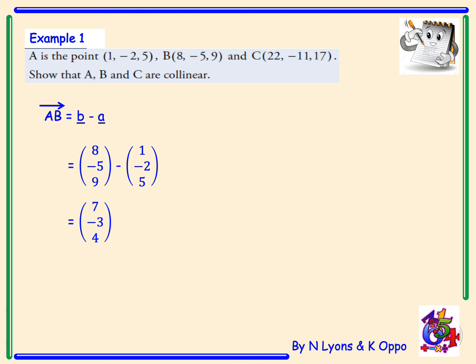We then need to find BC, which is C minus B: (22, -11, 17) subtract (8, -5, 9), which gives the vector BC as (14, -6, 8).